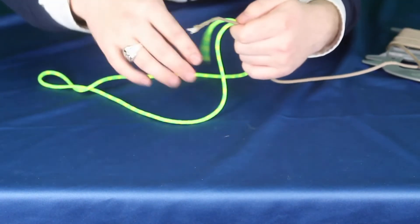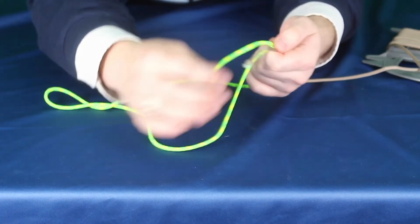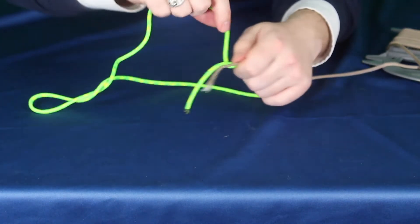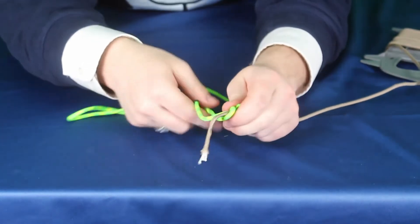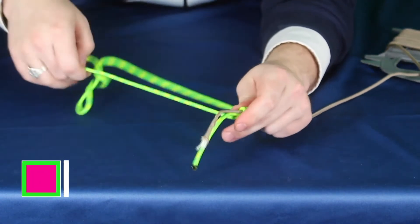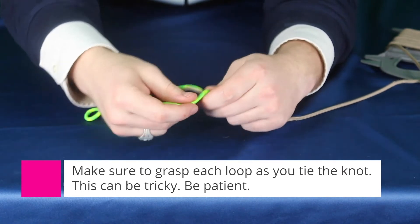Now taking the strand that is coming off of the fat end, we will be taking this and making at least five barrels over both our leader line and our fly line.